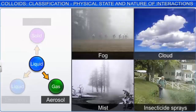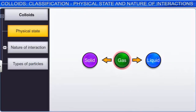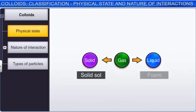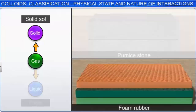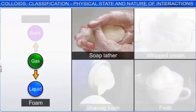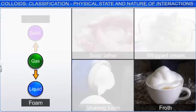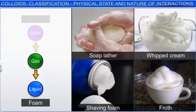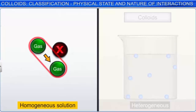Dispersion of a gas in a solid or a liquid dispersion medium results in the formation of solid sol and foam respectively. Examples of a solid sol with gas molecules are pumice stone and foam rubber. While soap lather, whipped cream, shaving foam, and froth are examples of foam. It is important to note that the colloidal system of a gas into some other gas is not possible because gases always form a homogeneous solution. Since colloidal systems are heterogeneous, they cannot be obtained by dispersing a gas into another.